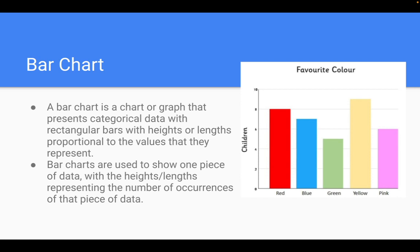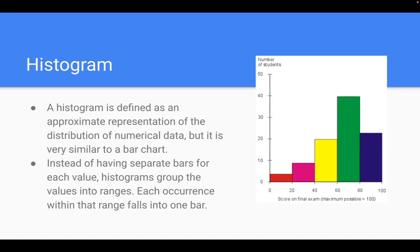Alright, so that's a bar chart. Now let's look at a histogram, which is fairly similar. A histogram is defined as an approximate representation of a distribution of numeric data, but is very similar to a bar graph or bar chart. So instead of having separate bars for each value, a histogram groups the range of values together, so each occurrence within the range falls into one bar. Over to the right is an example of a histogram.